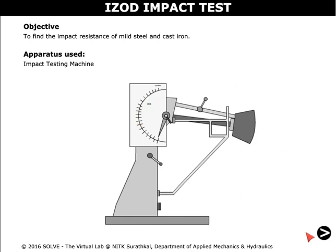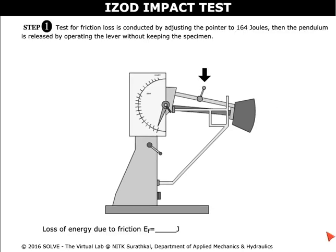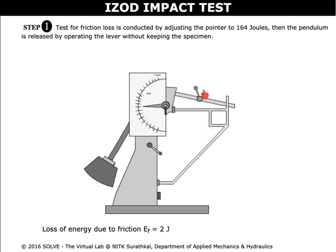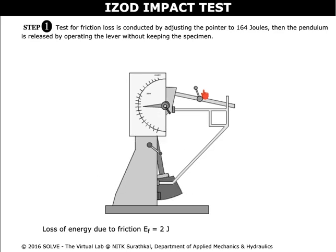Further in the simulation, in order to go to the next steps please click on the arrow below. Now release the pendulum by clicking on this lever and we can find the loss of energy due to friction. There is no test specimen placed here.